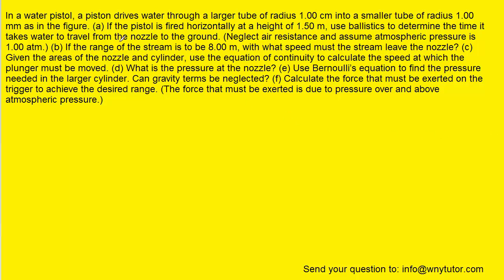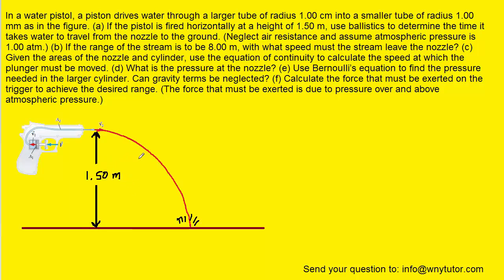To solve part A, we will draw a picture of this water gun shooting the water horizontally outward from a height of 1.5 meters. In order to calculate the time required to fall vertically down to the ground, we use kinematics equations. In the vertical direction, or the y direction, the initial velocity of the water is 0 meters per second, because it's fired horizontally — so initially it's only moving in the x direction.